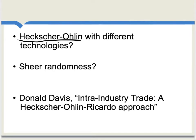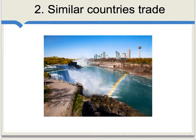Intra-industry trade may also be the result of factors which are neither increasing returns to scale nor factor intensities, and there's a very good article by Donald Davis on this point. Similarly, similar countries trade a lot with each other, such as the United States and Canada. At first glance this appears inconsistent with a factor intensities approach, but if you modify the assumption of identical technology within the factor intensities approach, it turns out to be quite consistent with the notion of similar countries trading a lot with each other.